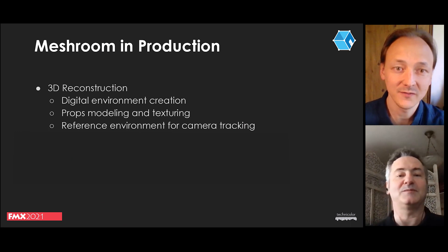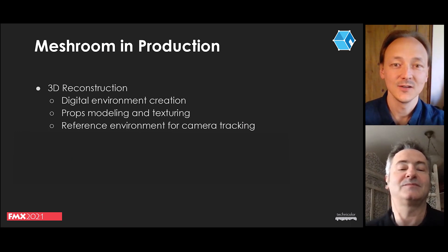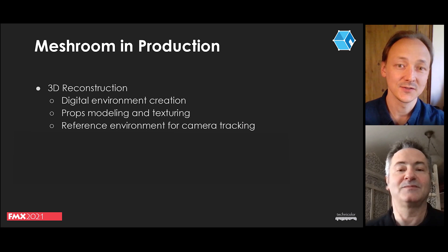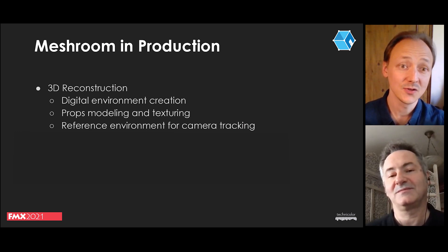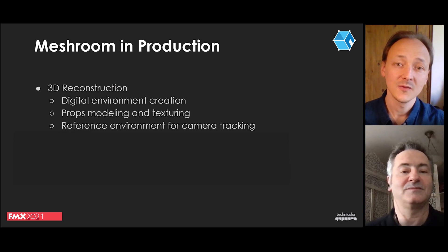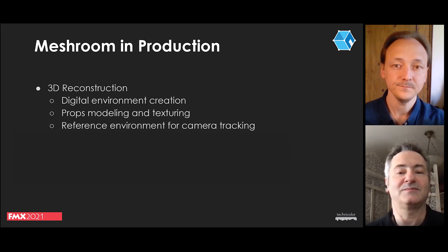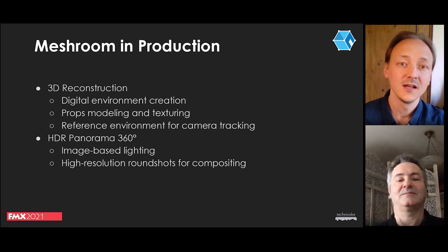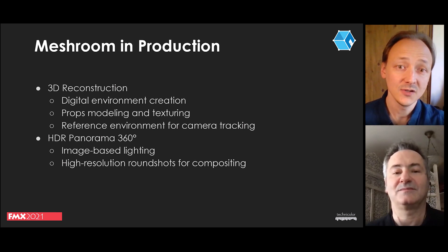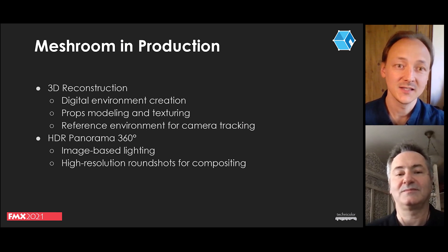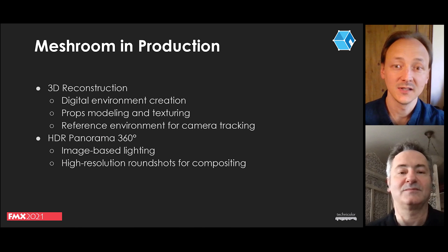Today we are presenting a computer vision software called Meshroom. Meshroom provides a 3D reconstruction pipeline that can be used for the 3D scan of the shooting set or for the 3D scan of film assets. The photogrammetry of the film set can also be a key element to do match moving of all shots within the same coordinate system. And since the end of 2020, Meshroom also provides a new pipeline for the creation of HDR panoramas. The objective of this 360 map is to replicate the lighting of the set environment, and it can also be used in high resolution for direct background replacement in compositing.